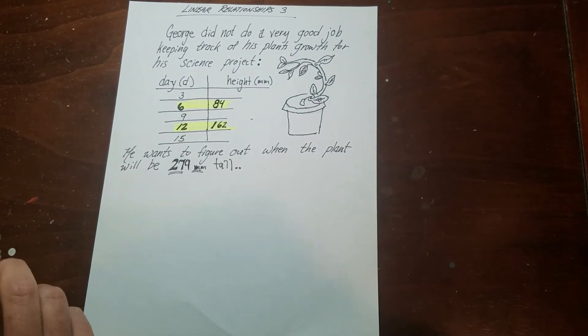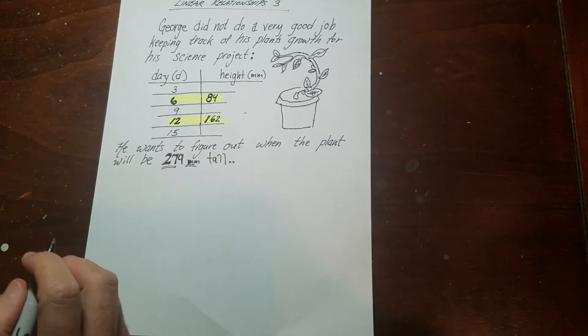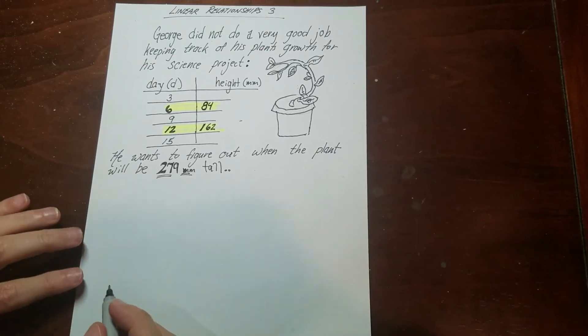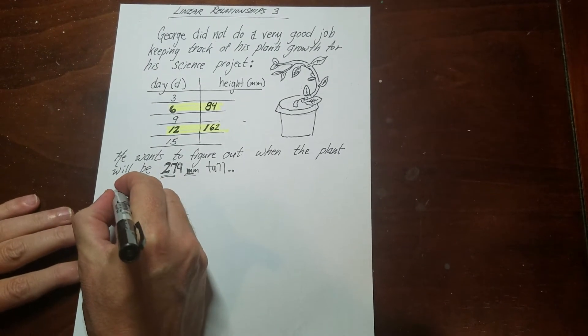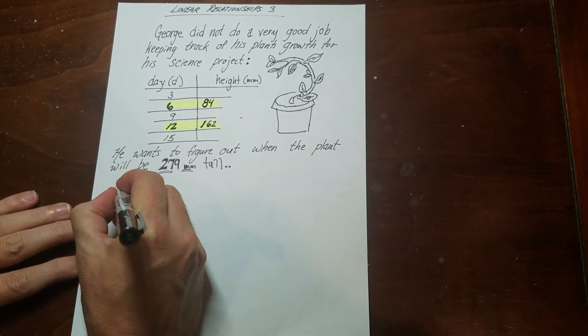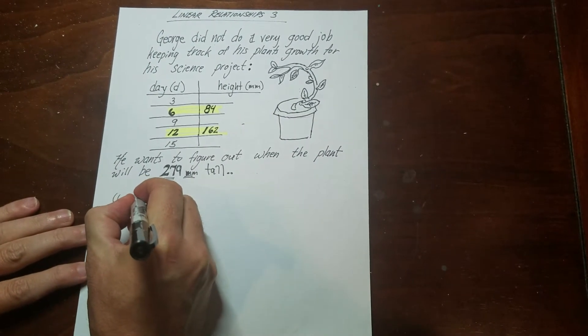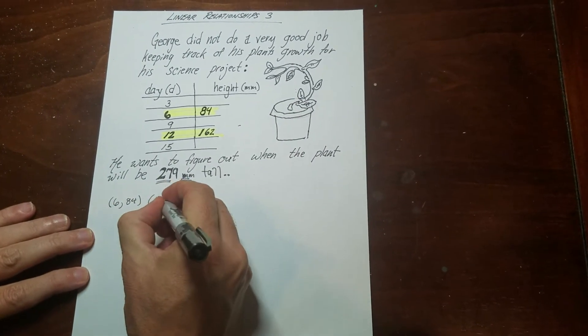So what we're going to do to help him out with this is we're going to find the rule for how the plant is growing. So what you're going to do is we look at this as if it's two points. So you have 6, 84 and we have 12, 162.